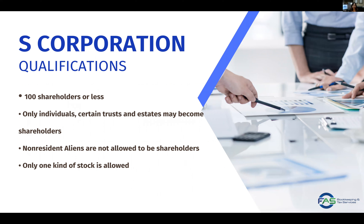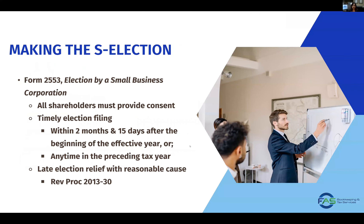To become an S-Corporation, there has to be an election that needs to be done. The qualifications are: there should be 100 shareholders or less, only individuals, certain trusts and estates may become shareholders, non-resident aliens are not allowed to be shareholders, and there is only one kind of stock allowed for an S-Corporation. To make that S-election, you file Form 2553, Election by a Small Business Corporation, and all shareholders must provide consent by signing that form.